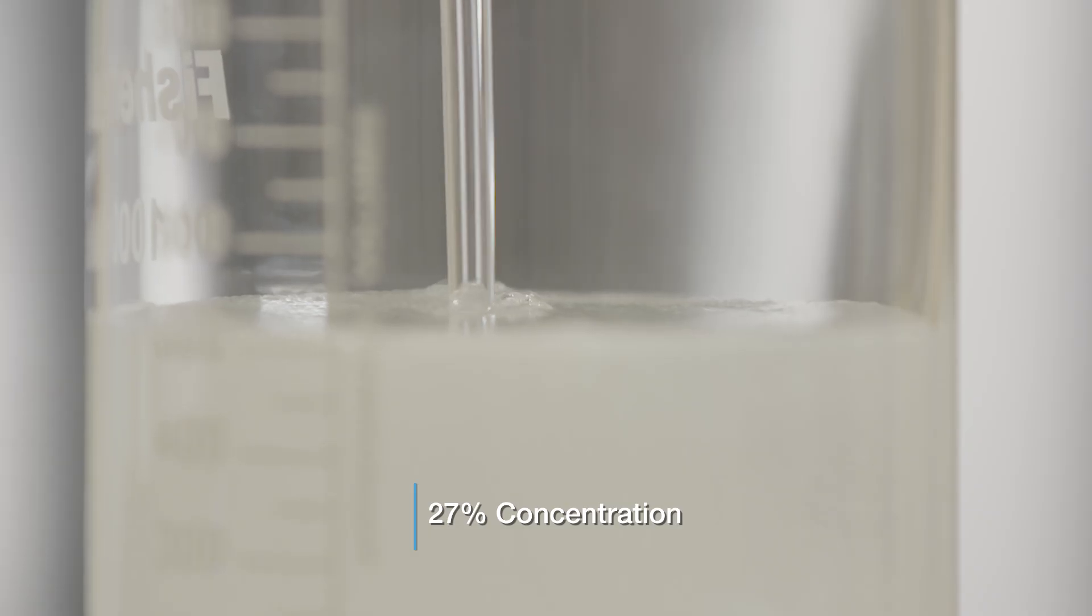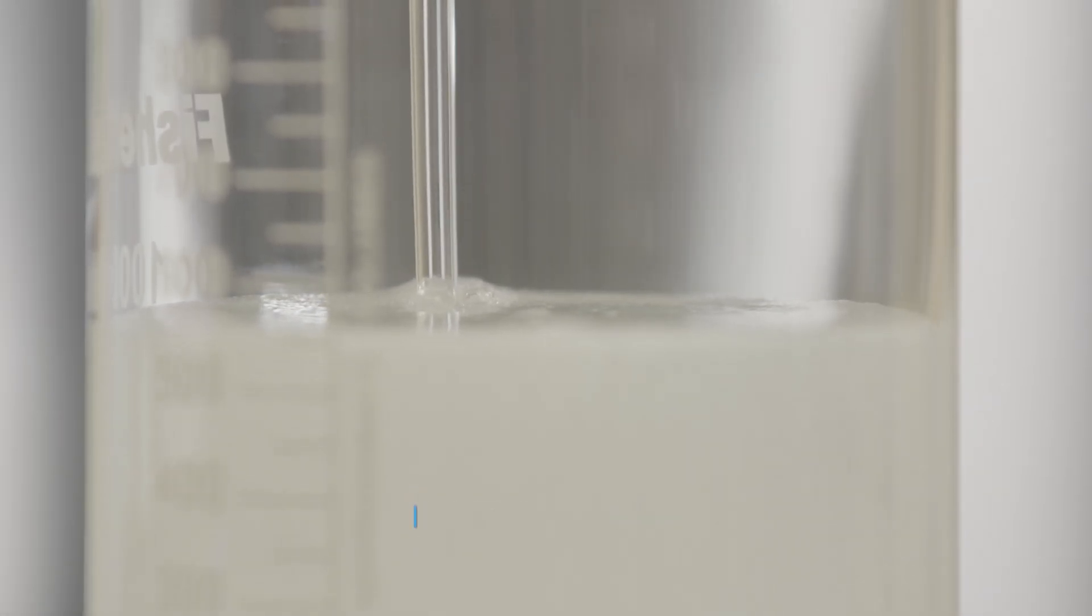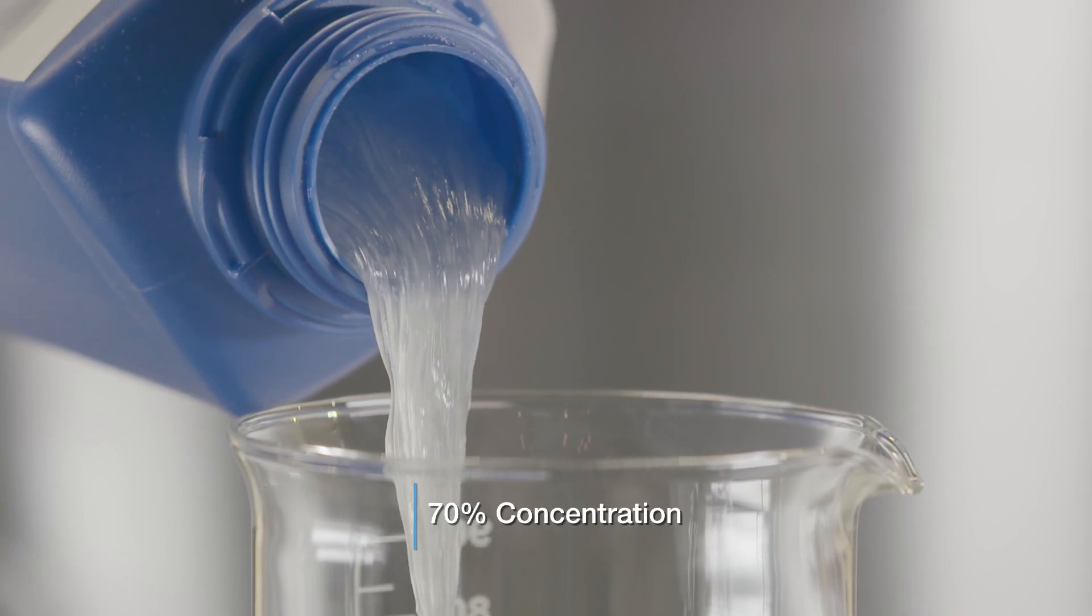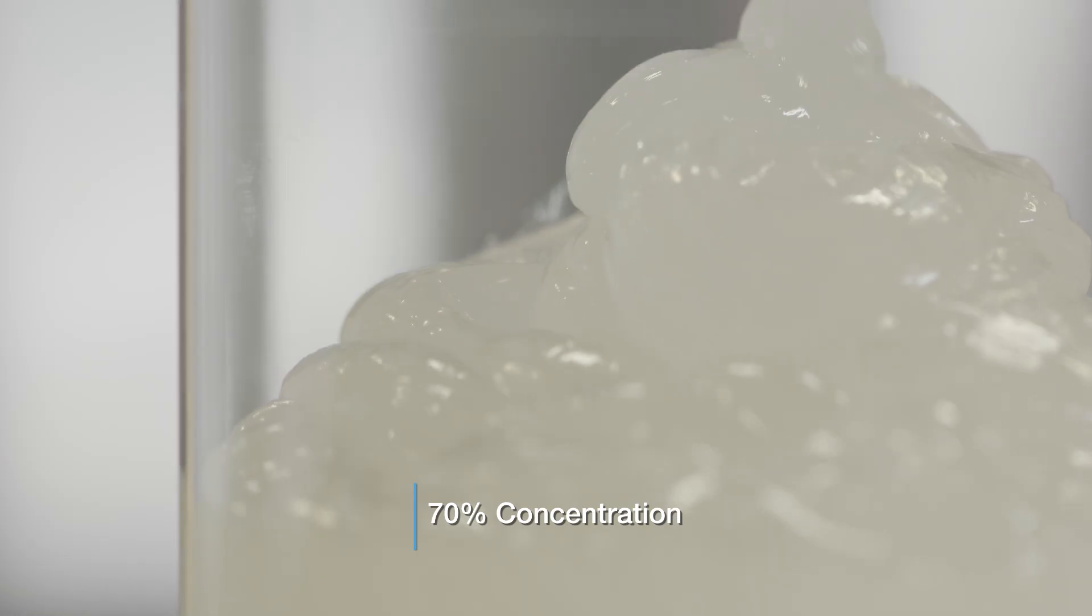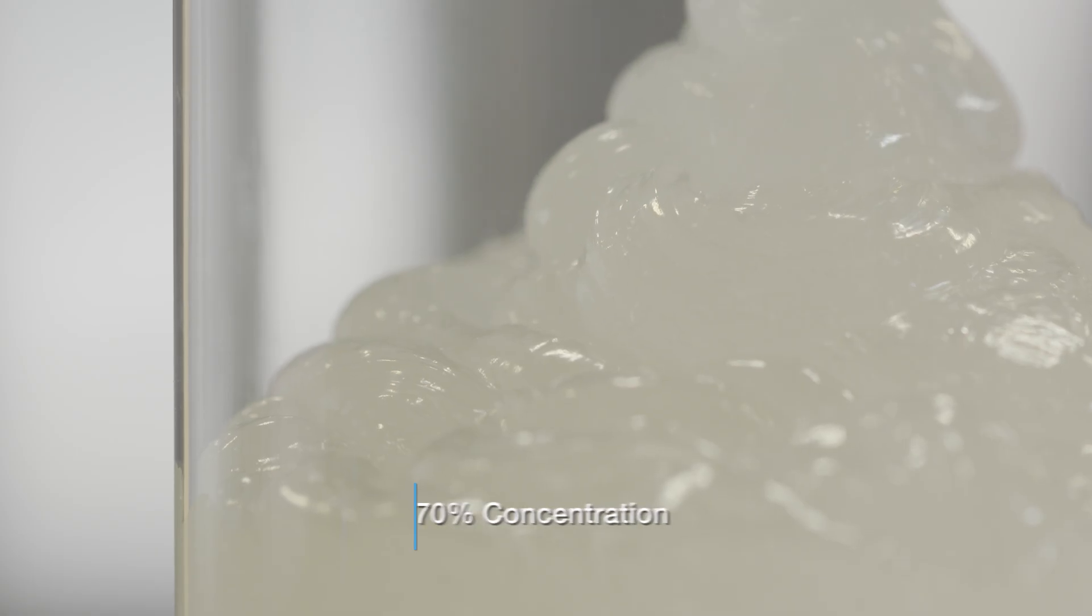They can be supplied at a concentration of 25 to 28% or in a high active form with a concentration of 65 to 70%. High active surfactants are widely used because they offer economies in transport and storage costs.